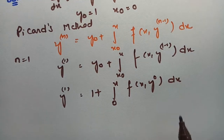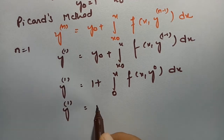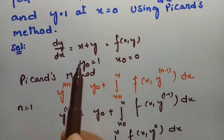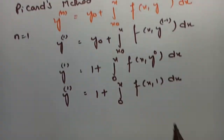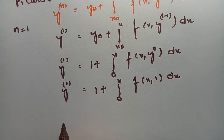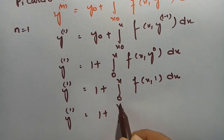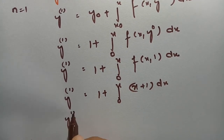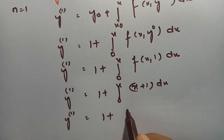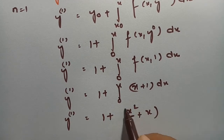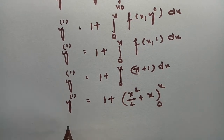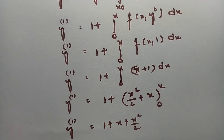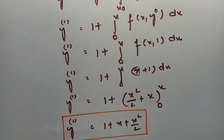So the first approximation is 1 + integral from 0 to x of f(x, y₀). Since f(x, y) = x + y and y₀ = 1, this becomes 1 + integral from 0 to x of (x + 1) dx. Integrating, we get 1 + [x²/2 + x] from 0 to x. Therefore the first approximation is 1 + x + x²/2.